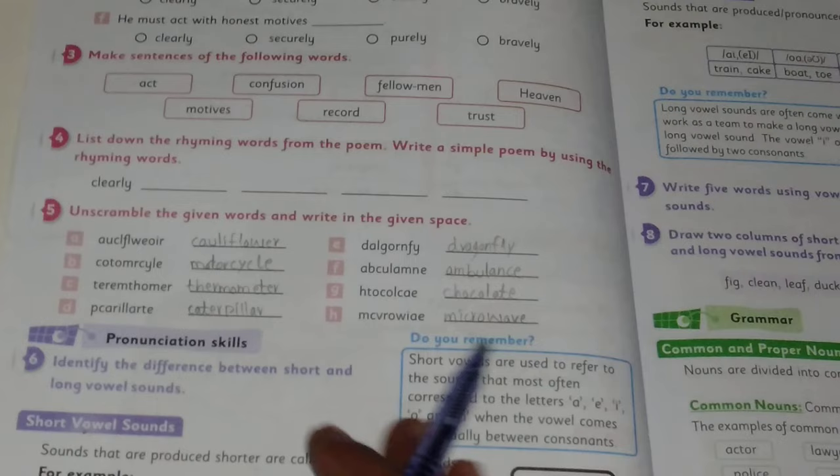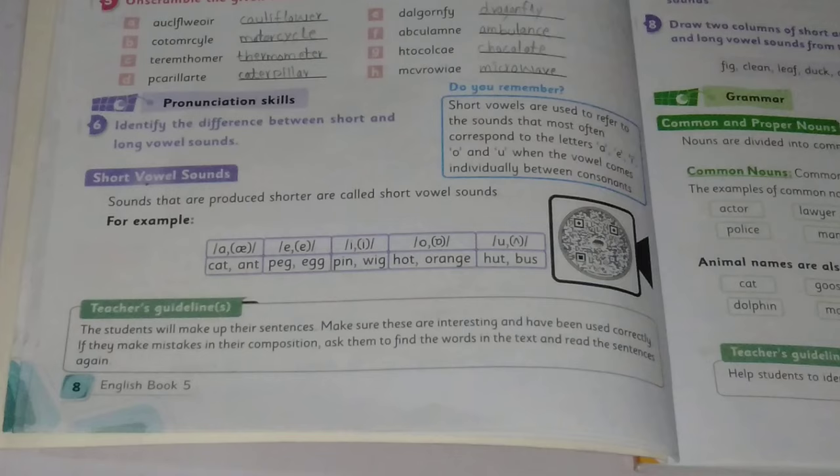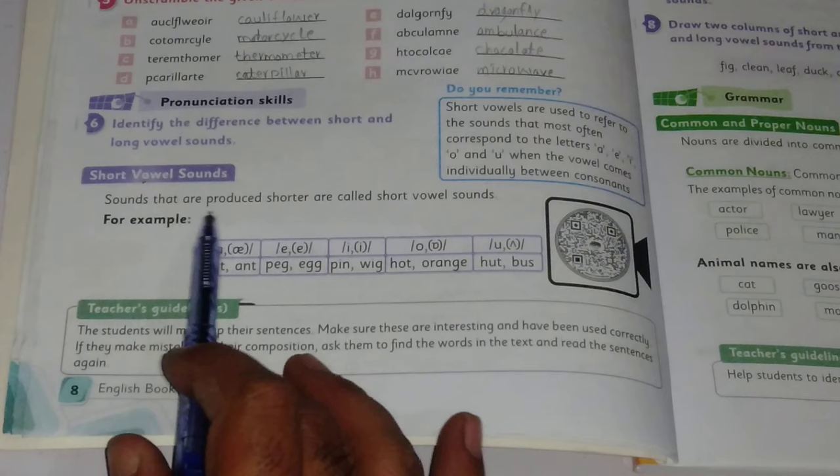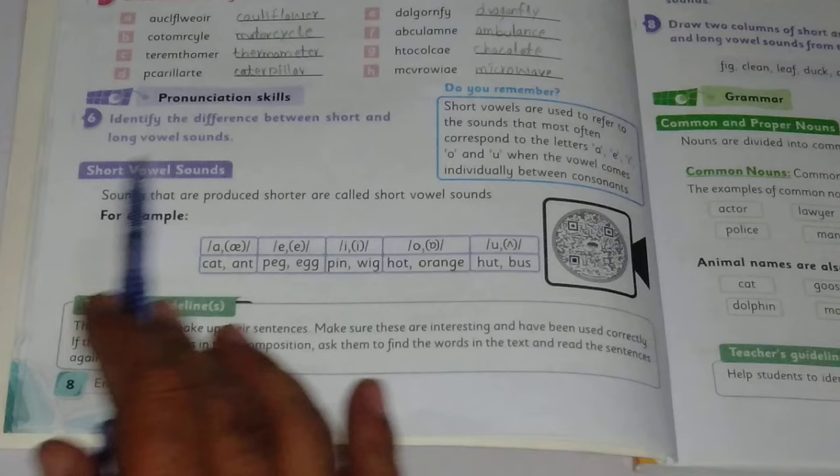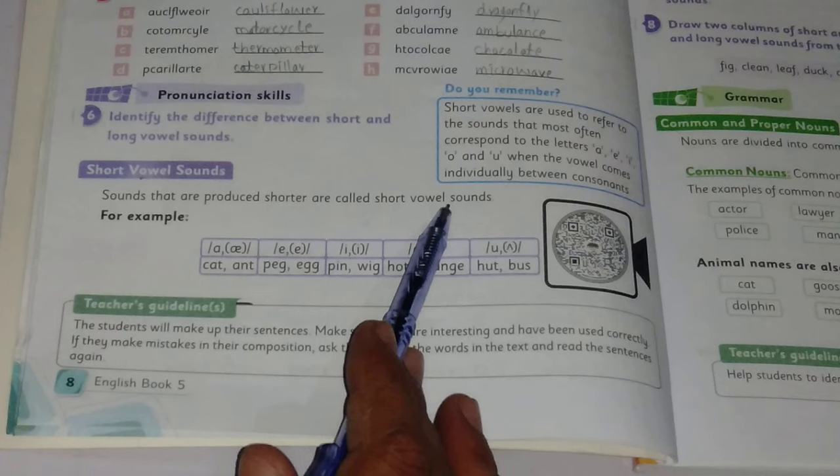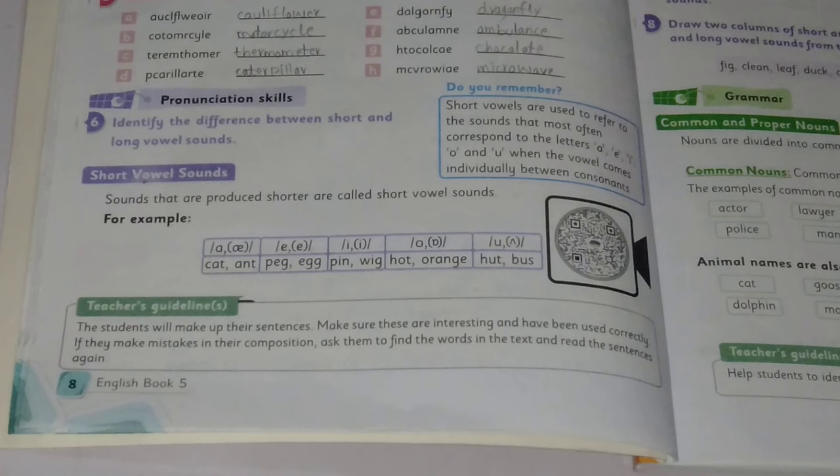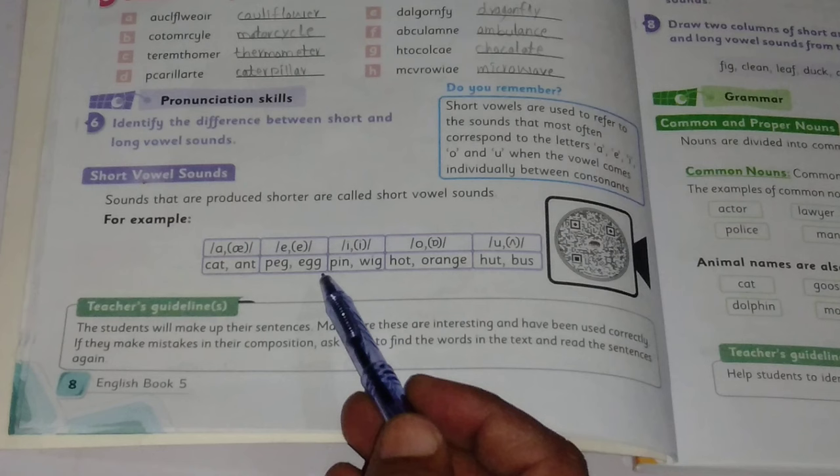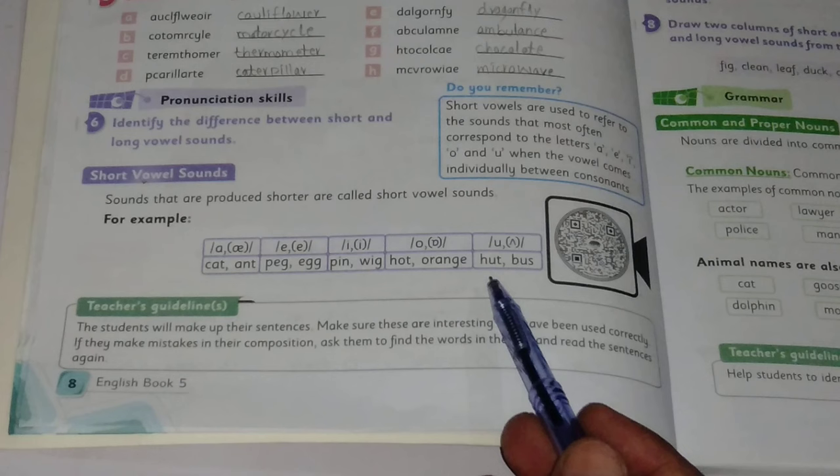This was a new question added in Unit 1. Next question: Identify the difference between short and long vowel sounds. Short vowel sounds are sounds that are pronounced shorter. For example: cat, pig, egg, pin, rig, hot, orange, hut, and bus. These words consist of short vowel sounds.